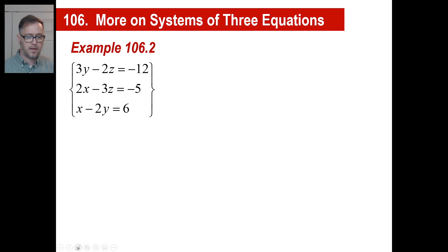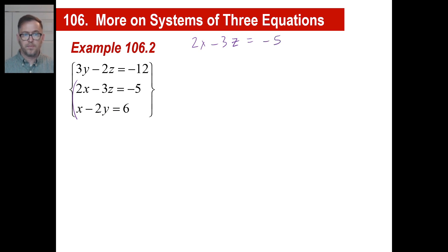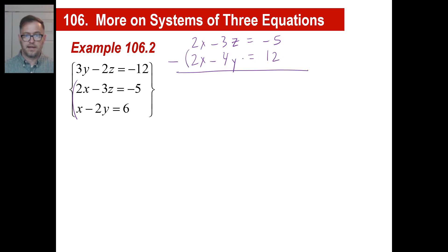Pause and copy if you need to. It seems like x would be easier to get rid of in this situation. We have a 2x, a minus 3z, and a negative 5. Let's multiply the other equation by 2 to match: we get 2x, then minus 4y, and 2 times 6 is 12. Now we subtract this entire thing. Negative 3z minus negative 4y equals negative 5 minus 12, which is negative 17. So our new equation has both y and z in it.